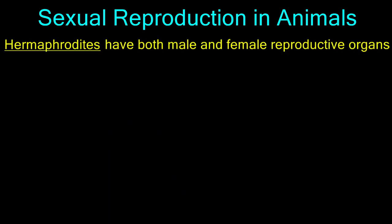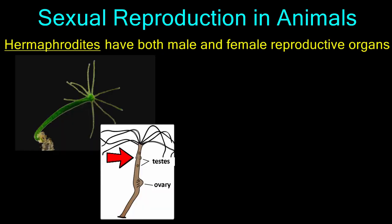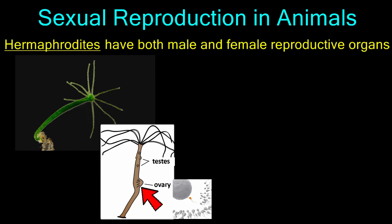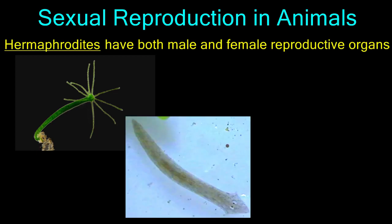Hermaphrodites have both male and female reproductive organs, so they can produce both egg and sperm. Only the simplest animals are hermaphroditic. Hydra are animals that are hermaphroditic. Their testes produce sperm that are released into the surrounding water. Waves and currents transport the sperm to the ovaries of other hydra where fertilization occurs.